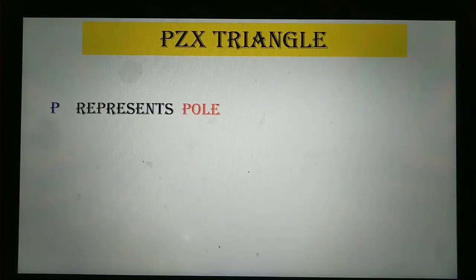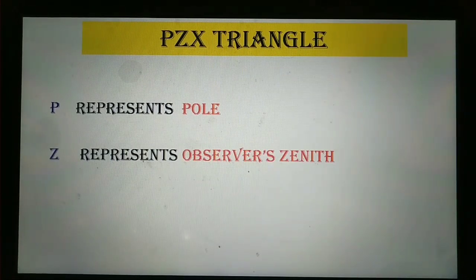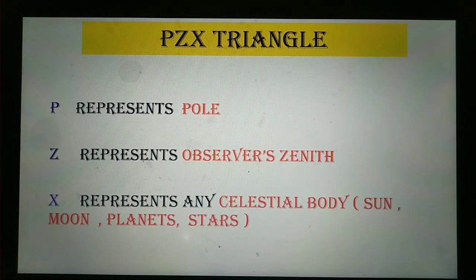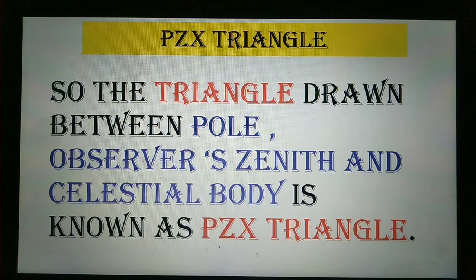P represents pole. Z represents observer's zenith. And X represents any celestial body like sun, moon, planets, or stars from which the sight has been taken. So the triangle drawn between pole, observer's zenith, and celestial body is known as the PZX triangle.